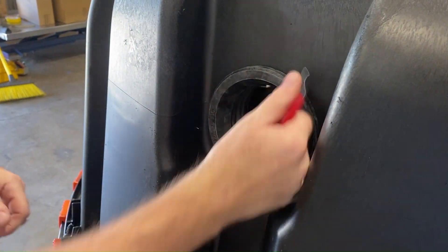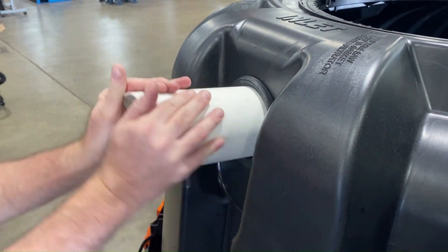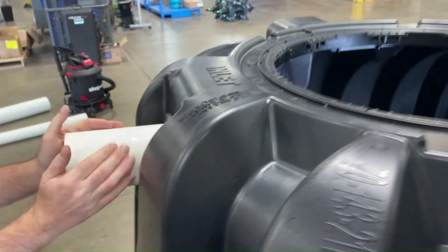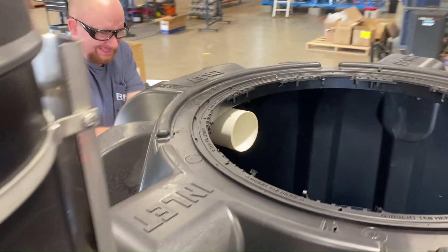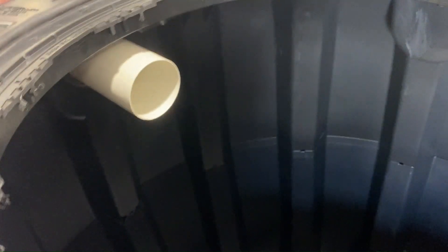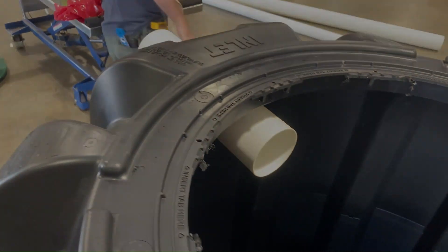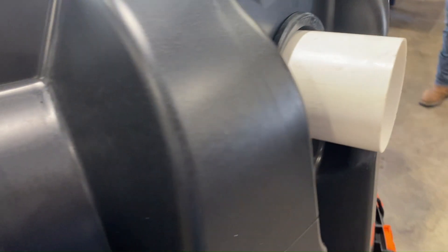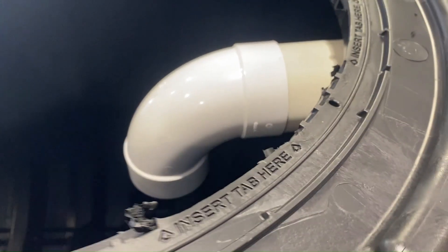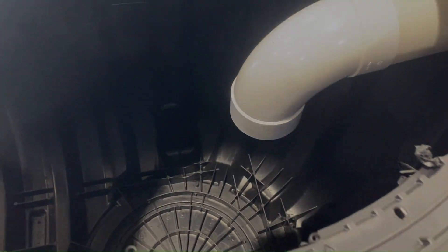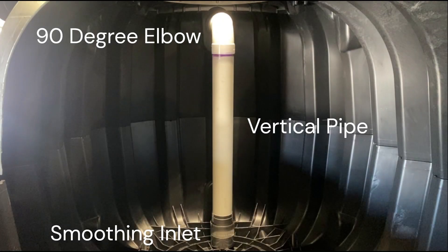Once your gasket is set, you'll want to shimmy in a stub of 4 inch pipe. Be sure that you have adequate pipe length on either end of the gasket to work with when connecting more pipes and fittings to the stub. Next, glue a 90 degree elbow to the interior side of the inlet stub pointed downward so that you can run a section of vertical pipe to feed the smoothing inlet.